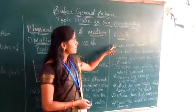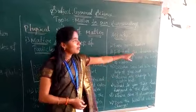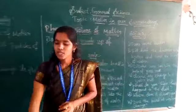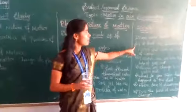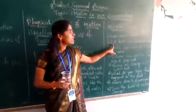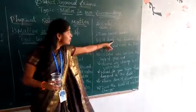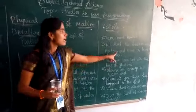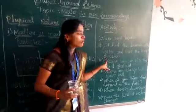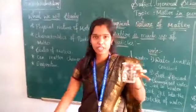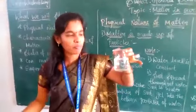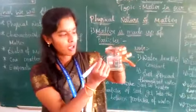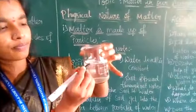For this activity, you require a 100 ml beaker. Fill half the beaker with water and mark the level of water. I have already filled the beaker half with water, and now I am going to mark the water level.